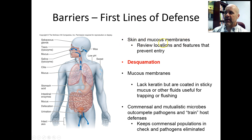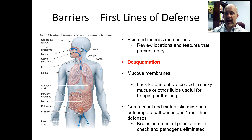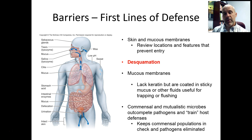Their epithelial tissues have cells that are tightly packed together, making it difficult for microorganisms to get past those barriers unless there's been some kind of a break. Some microbes have the ability to break apart those cell-cell connections or even kill the cells along the barrier linings, allowing them to invade deeper. But most microbes can't do that, so most never get into deeper tissues in the first place.